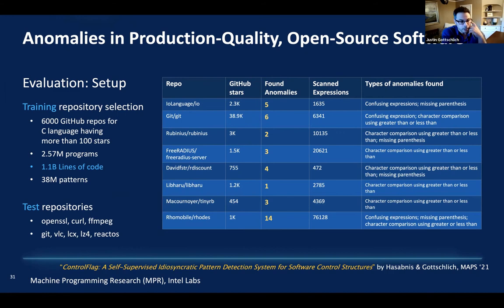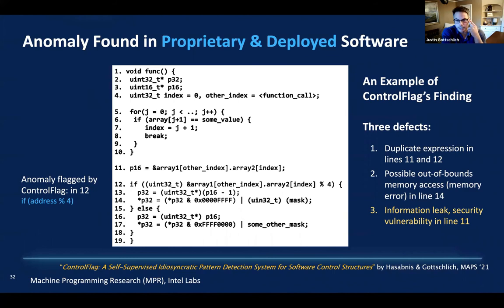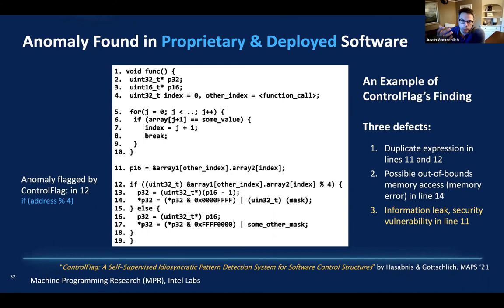We also tested on proprietary deployed software — production quality code in deployment for several years. ControlFlag found essentially three different defects. The most interesting and dangerous one: ControlFlag found this mod-4 to be particularly bizarre. By default, what's interesting about many MP systems today like GitHub Copilot, Tab9, or ControlFlag — we give humans hints but don't do anything concrete automatically, unlike verified lifting which can do fully closed-loop transpilation with correctness guarantees.